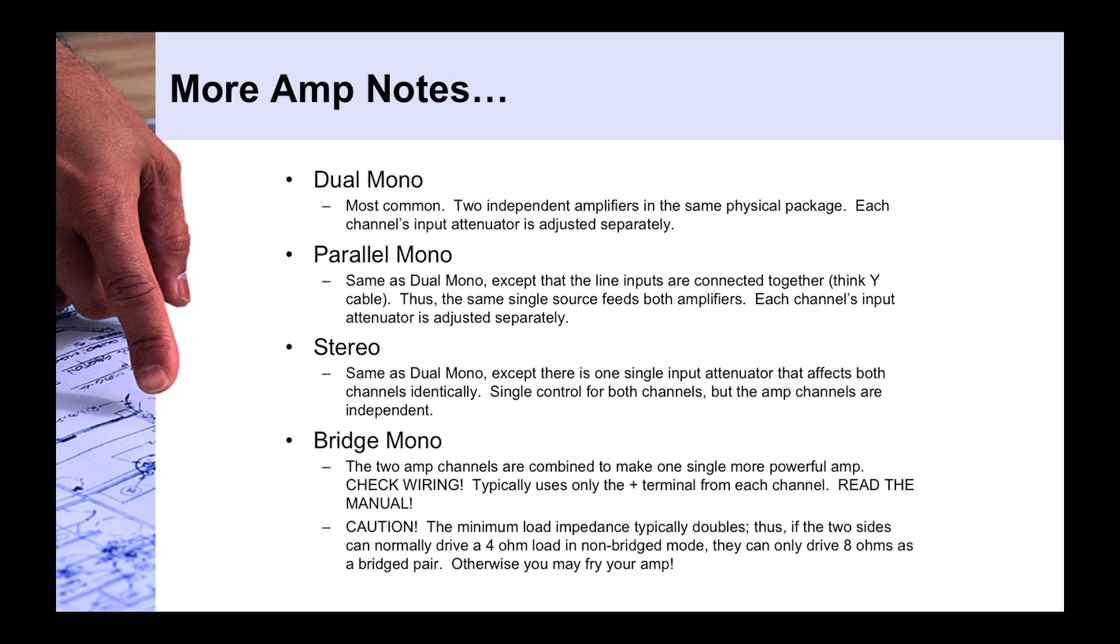Some more amplifier notes that you may find on spec sheets, what is dual mono, parallel mono, stereo, or bridge mono mode for your amplifiers? Now, dual mono is going to be the most common. It's simply two amplifiers in the same package. It's like a two-channel amplifier, and each input is discrete, and each output is discrete, and each channel's input attenuator is adjusted independently. So, you could have two completely different things being amplified, two different inputs, two different outputs, and just two mono amplifiers in the same physical box.